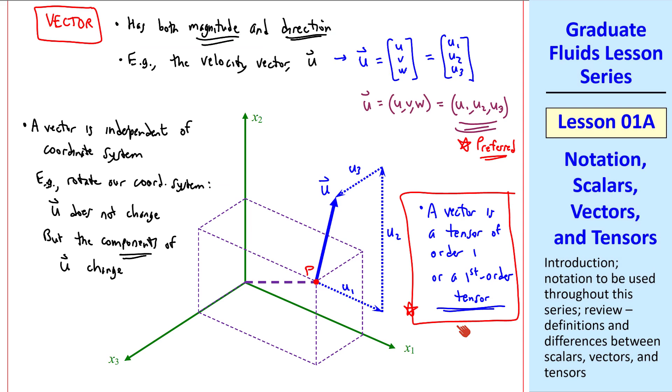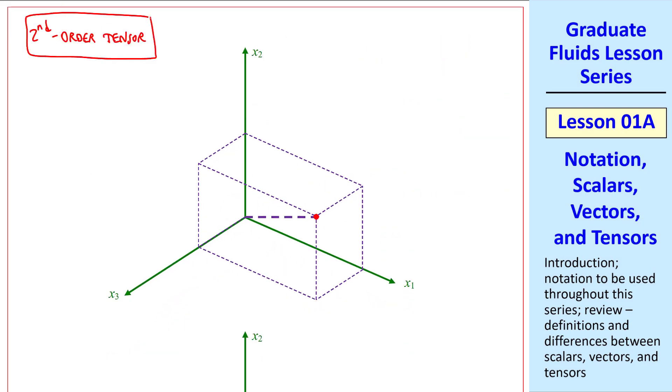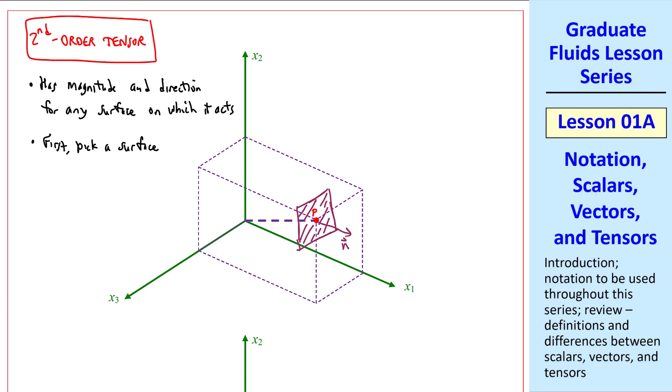Since we've talked about zero- and first-order tensors, we'll now talk about second-order tensors. This one is much harder to visualize, especially on a 2D plane. Like a vector, it has magnitude and direction, but it has these for any surface on which it acts. So to illustrate a second-order tensor, we first pick a surface. For example, I'll sketch a vertical surface that runs through our point p. We define the unit outward normal as n, a unit vector. Once we've picked the surface, then we can define a vector acting on that surface.